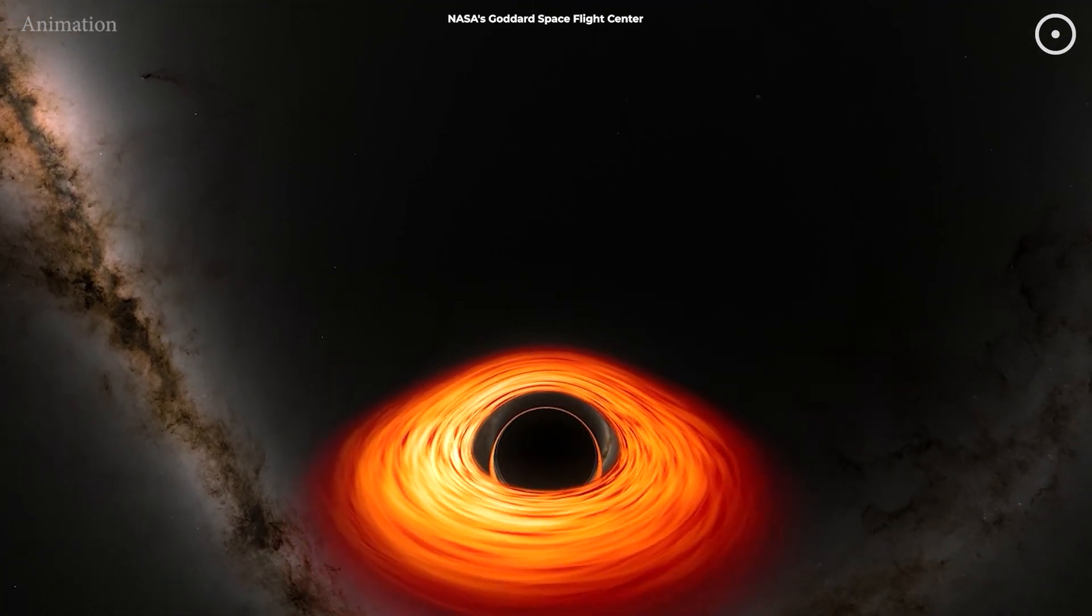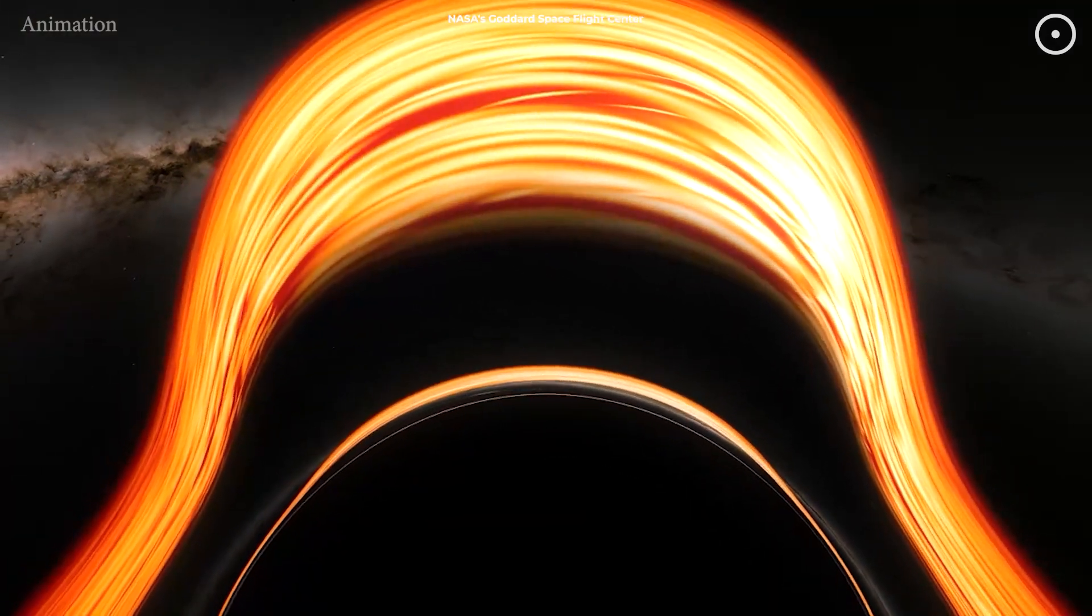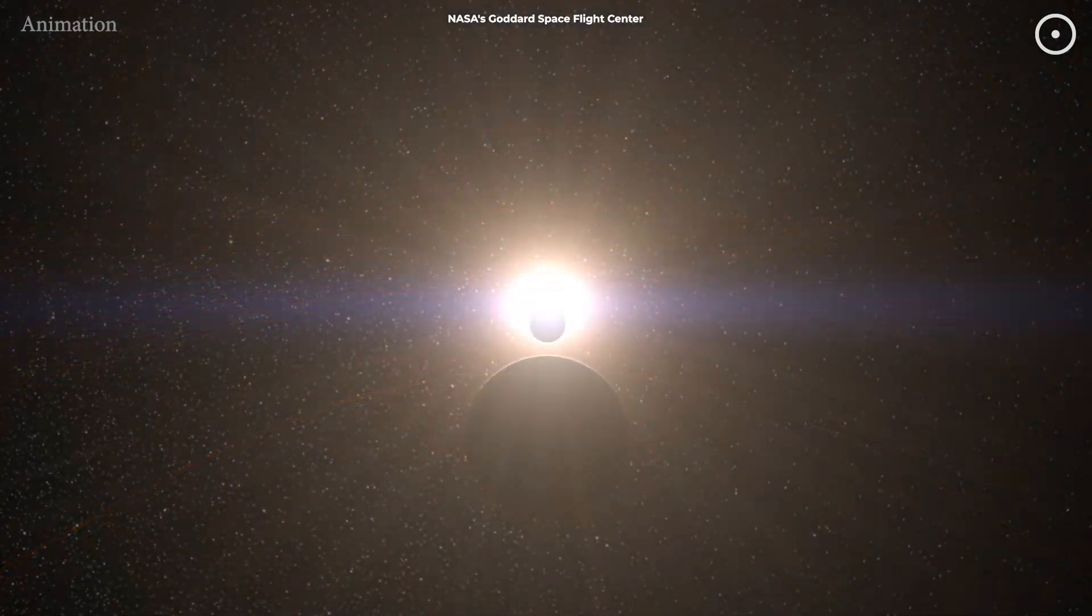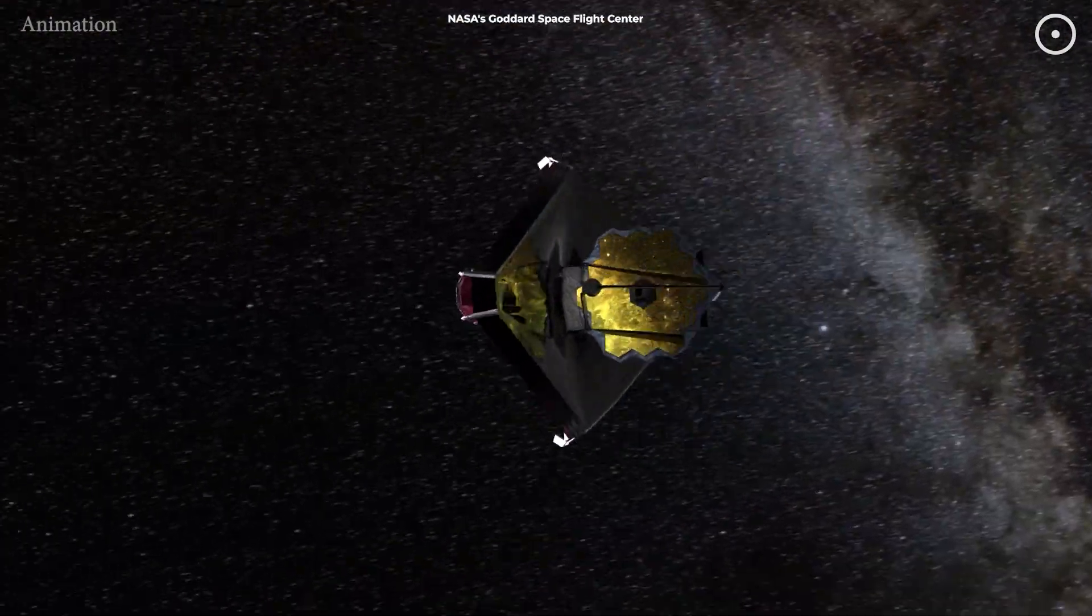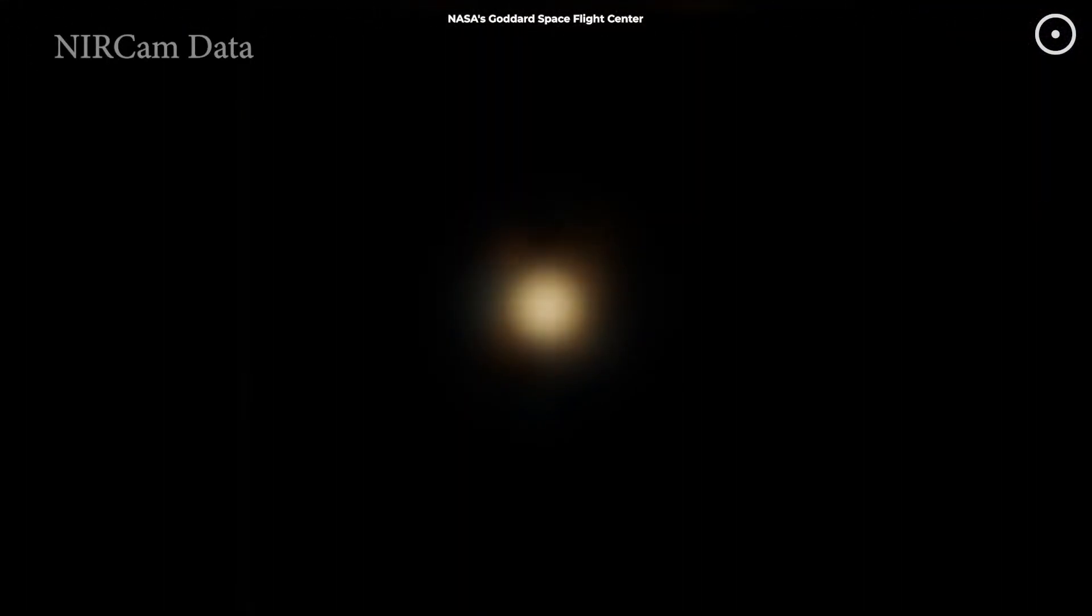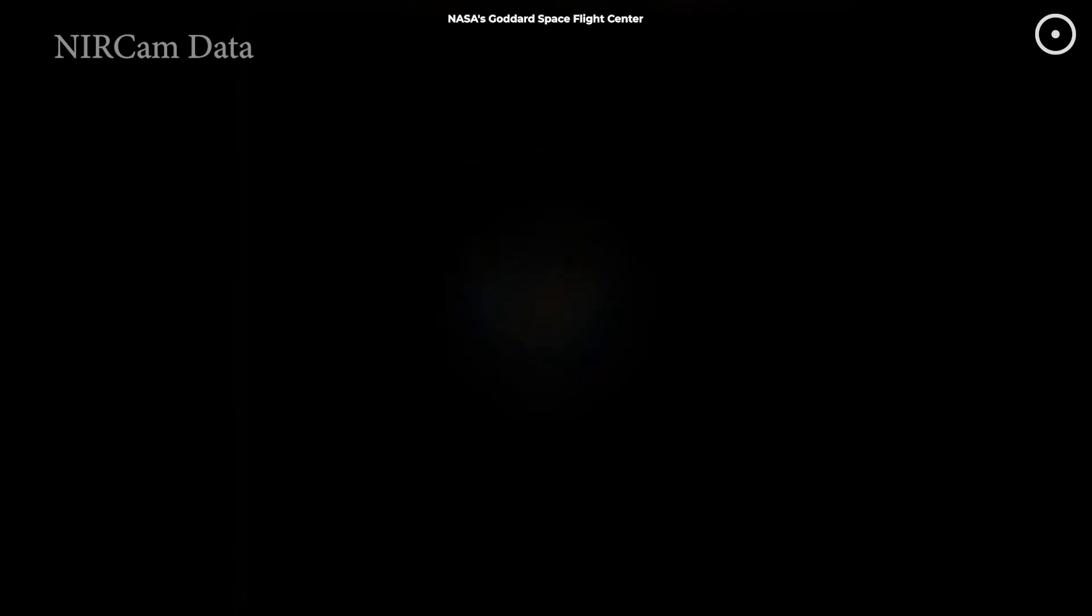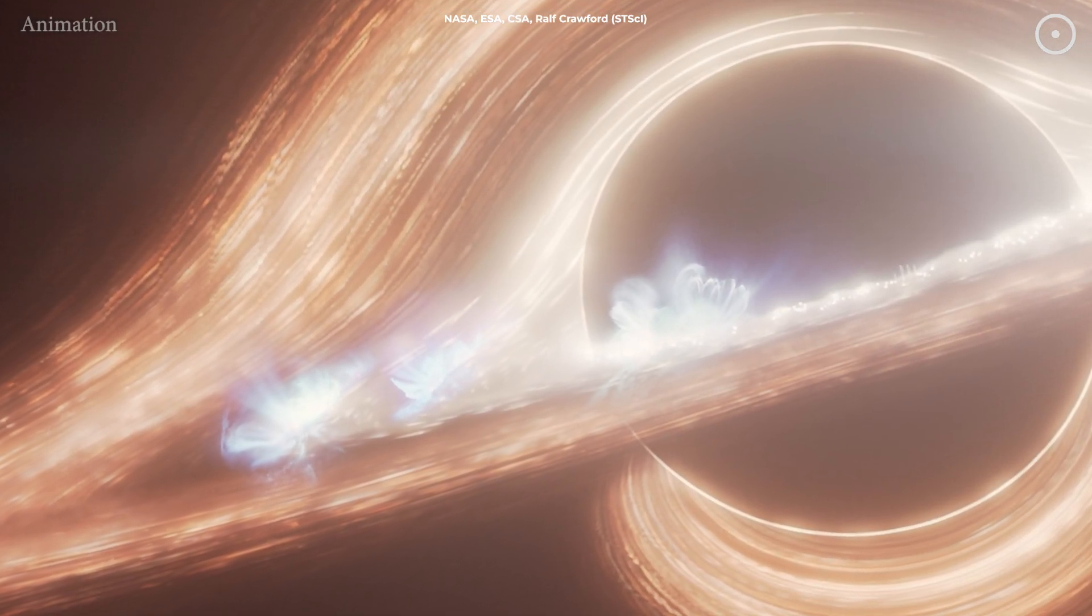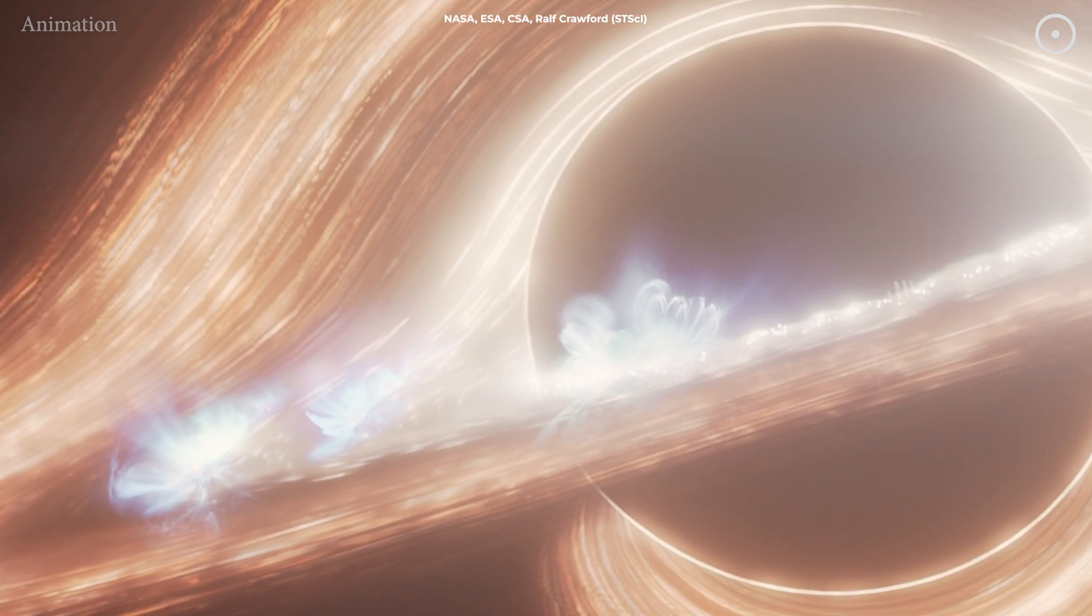While nothing can escape a black hole once it passes the point of no return, the space around it is actually one of the most violent and energetic places in our universe. What Webb just observed is absolutely unprecedented. For an entire year, astronomers watched as our galaxy's central black hole put on a light show that never stopped—not for a day, not for an hour, not even for a minute. But to understand why this discovery is so revolutionary, we first need to zoom in and see exactly what's happening at this cosmic dance floor.